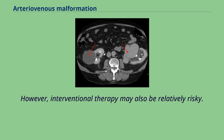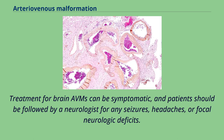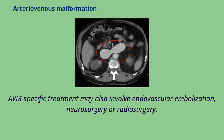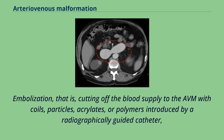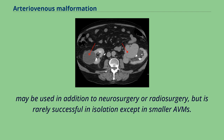Treatment for brain AVMs can be symptomatic, and patients should be followed by a neurologist for any seizures, headaches, or focal neurologic deficits. AVM-specific treatment may also involve endovascular embolization, neurosurgery, or radiosurgery. Embolization — that is, cutting off the blood supply to the AVM with coils, particles, acrylates, or polymers introduced by a radiographically guided catheter — may be used in addition to neurosurgery or radiosurgery, but is rarely successful in isolation except in smaller AVMs.